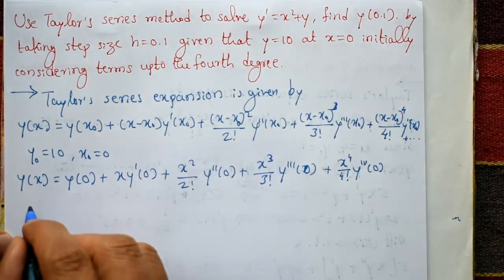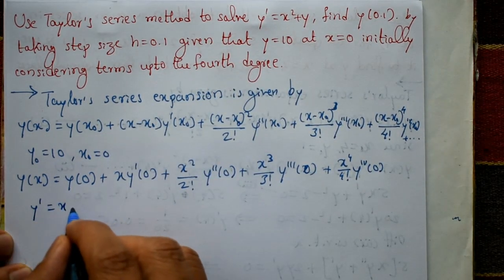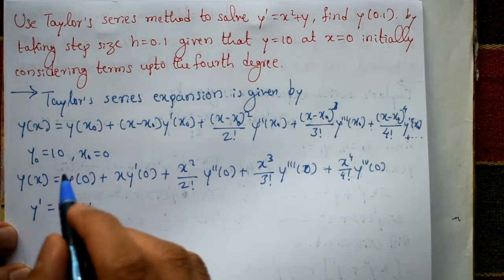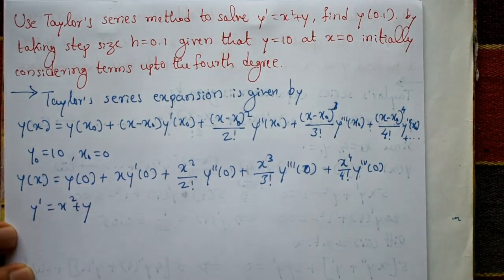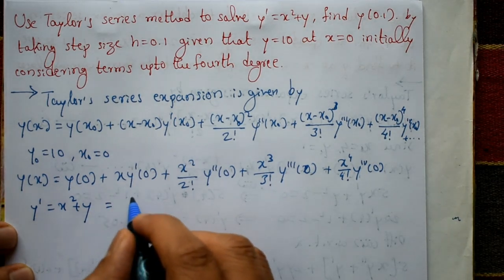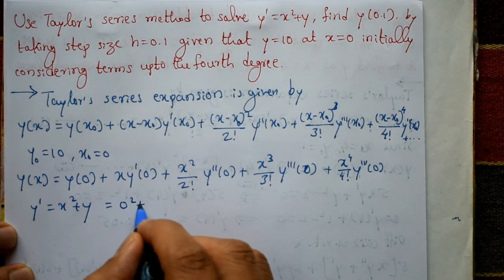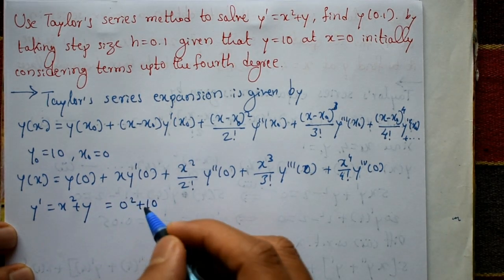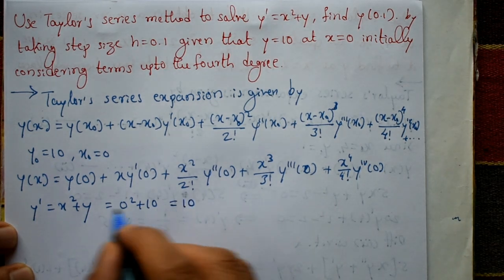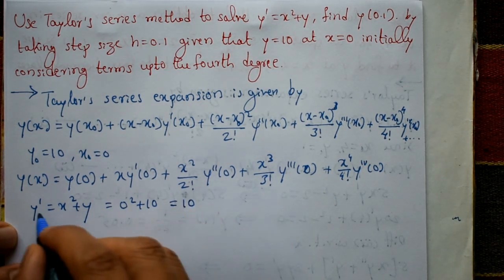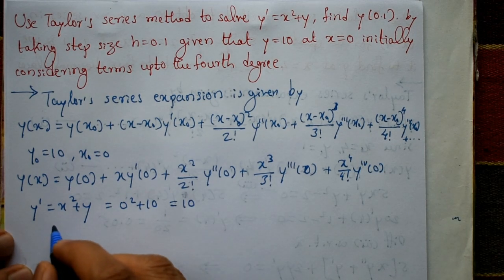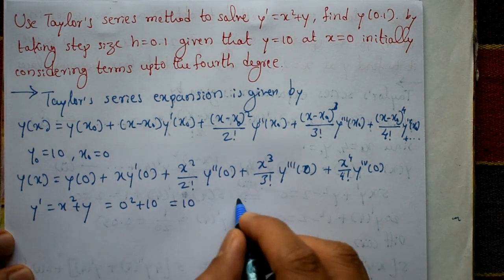From the given equation, y' = x² + y. Substituting x = x₀ = 0 and y = y₀ = 10, we get y'(0) = 0² + 10 = 10.